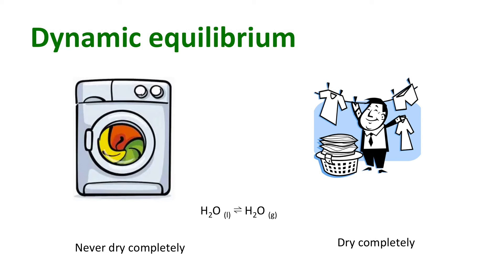Take this as an example: liquid water will have dynamic equilibrium with steam. After you wash your clothes, if you put them in a washing machine — a closed system — the liquid water will reach equilibrium with the steam. Since both reactant and product concentrations will not equal zero, liquid water will exist forever, meaning your clothes will never dry. But if you put your clothes under sunshine or in an open area, liquid water will continuously turn to gaseous water, and eventually all the liquid water will be gone and the clothes will be completely dry.